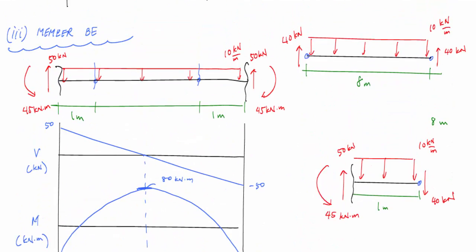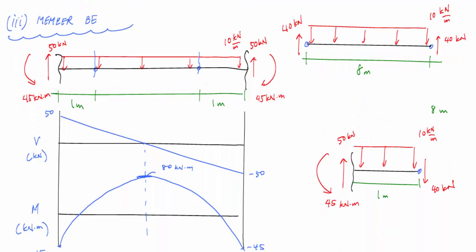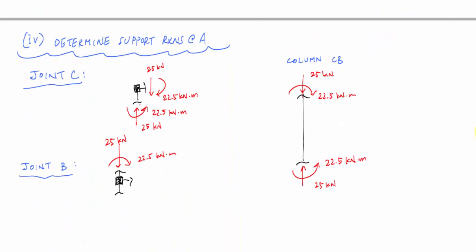And I go back and I look at member BE. And I found that the end shear and end moment here at end B was 45 kilonewtons meters and 50 kilonewtons. And so I'm going to have equal and opposite on this face of the cut. So I have 50 kilonewtons and 45 kilonewton meters like this.